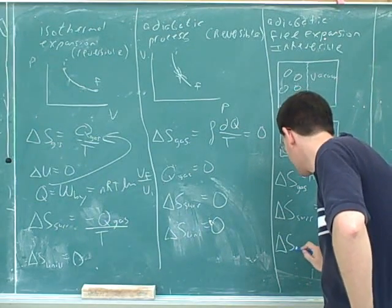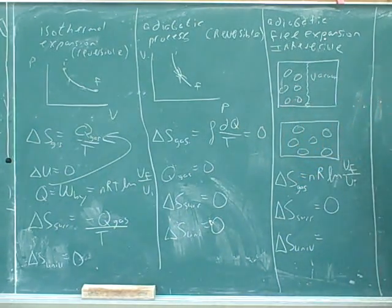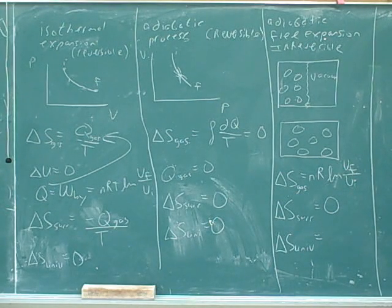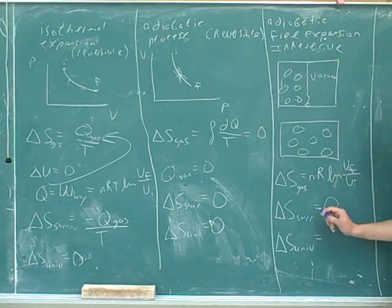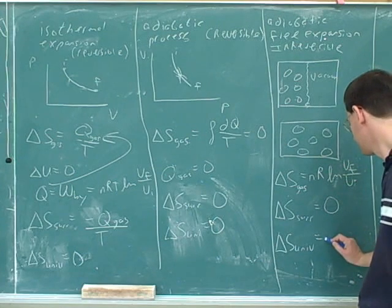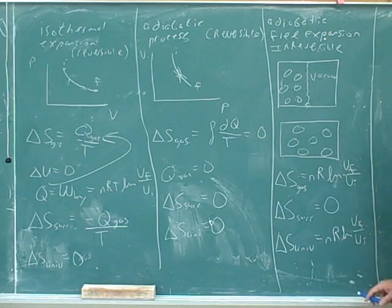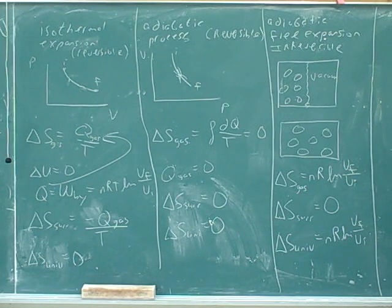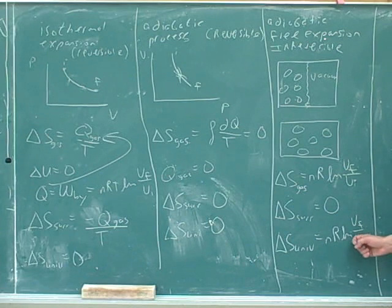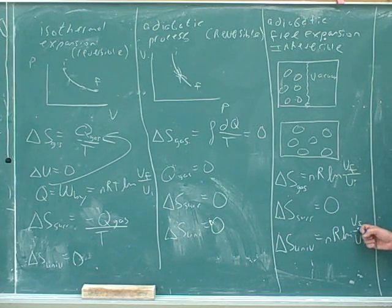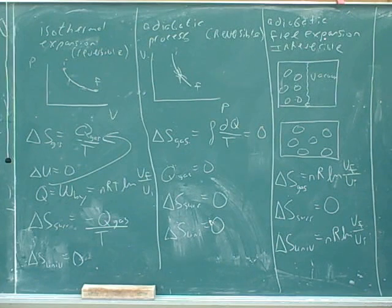So what can we say about the delta S for the universe? Equal to delta S of the gas. That's right. It would be this plus this, but this is zero. So for a free expansion, would the delta S be positive, negative, or zero? Of the universe? It would be positive. This is going to come out to be positive. Since this fraction is bigger than one, this will come out to be a positive number. So we would say that the universe's entropy is increasing.